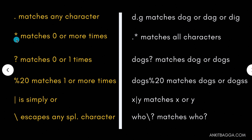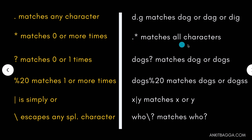Then there is star. Star matches anything from zero to more than zero times. So if you combine dot with star, it would ideally match any character of any length. So dot-star would match all characters.